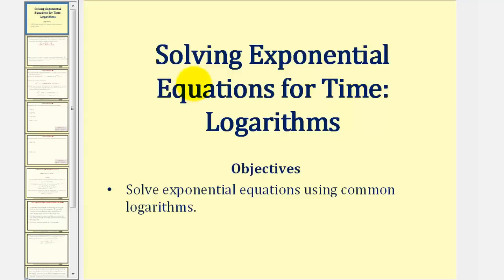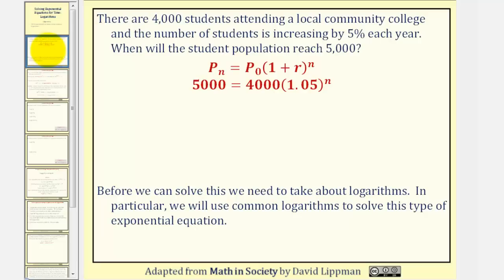Welcome to a lesson on solving exponential equations for time using common logarithms. As an example, let's say there are 4,000 students attending a local community college and the number of students is increasing by 5% each year. When will the student population reach 5,000?